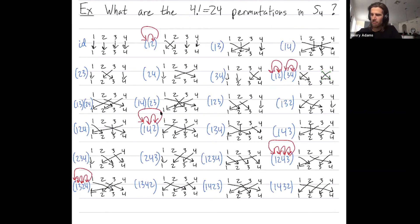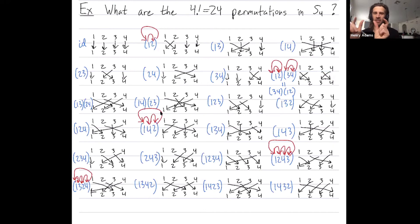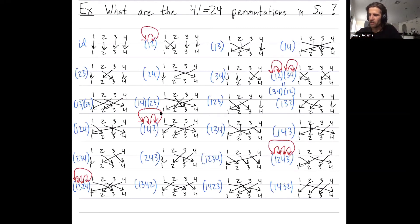It doesn't matter the order in which you write disjoint cycles, so (1 2)(3 4) is the same as (3 4)(1 2). It turns out that disjoint cycles — cycles that have no shared numbers — commute, but more general cycles that have elements in common don't commute.